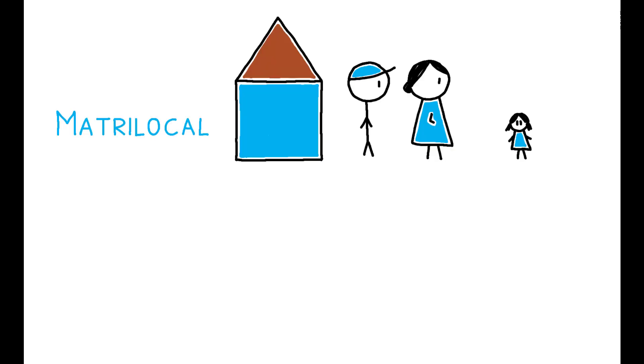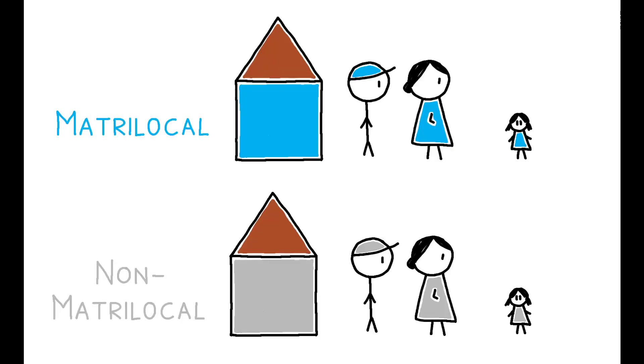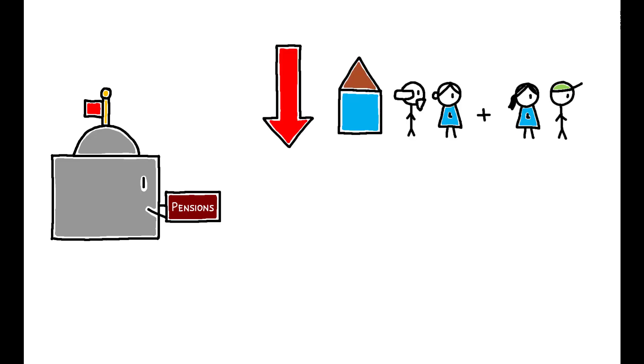Finally, the key question is the differential effect of the pension plan on matrilocal households. Thus, the author compares matrilocal versus non-matrilocal ethnic groups. And she finds that the introduction of the pension plan reduced both the practice of matrilocality and educational investments in women.